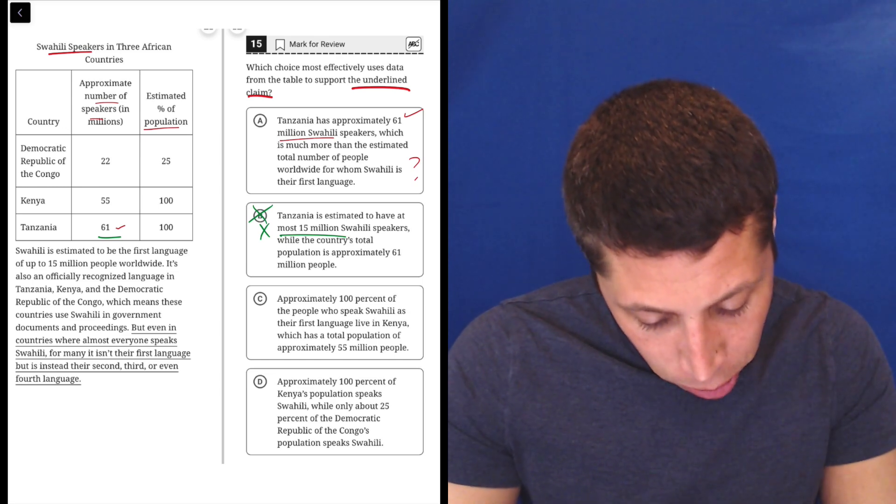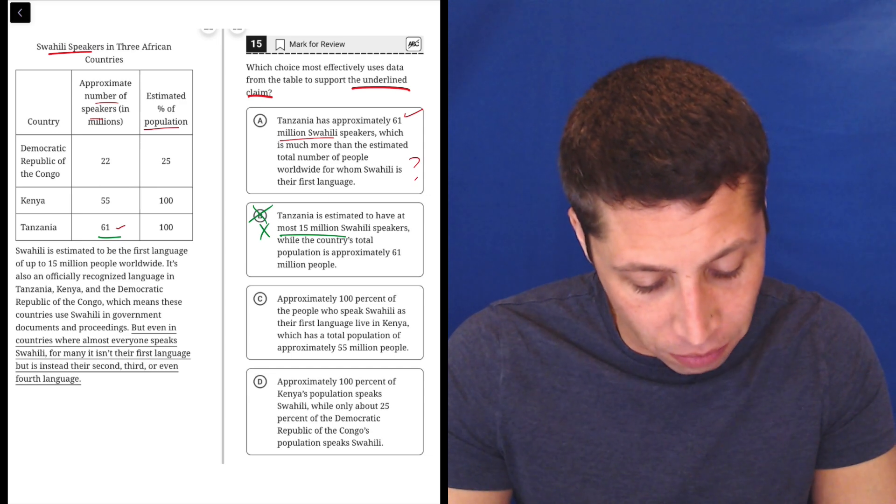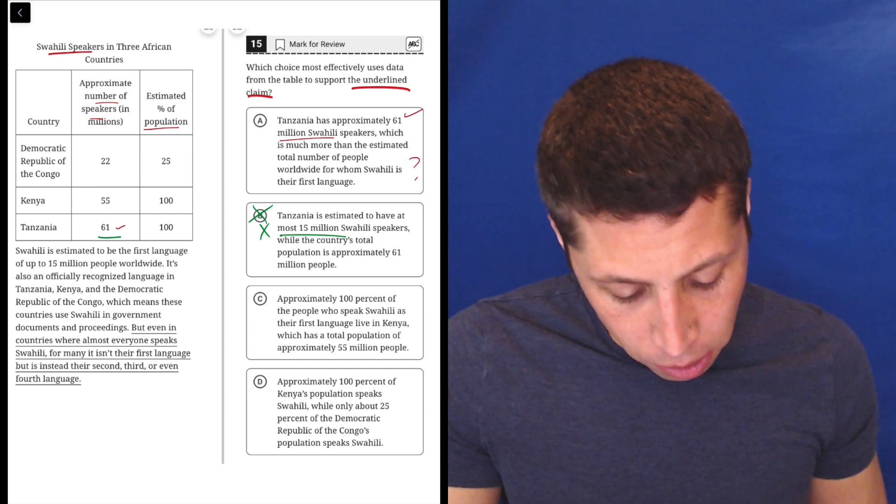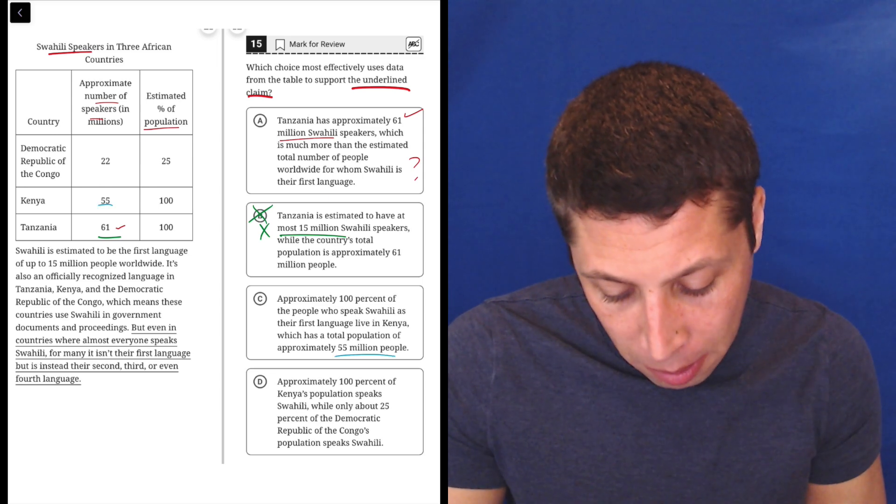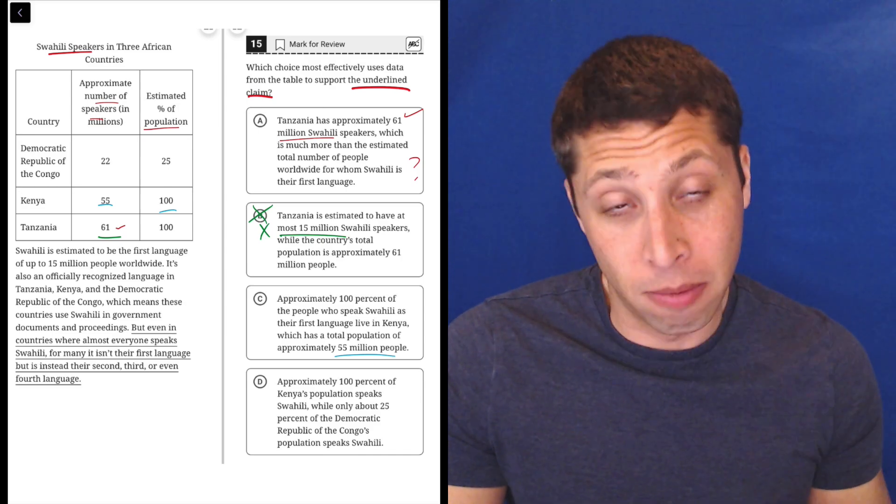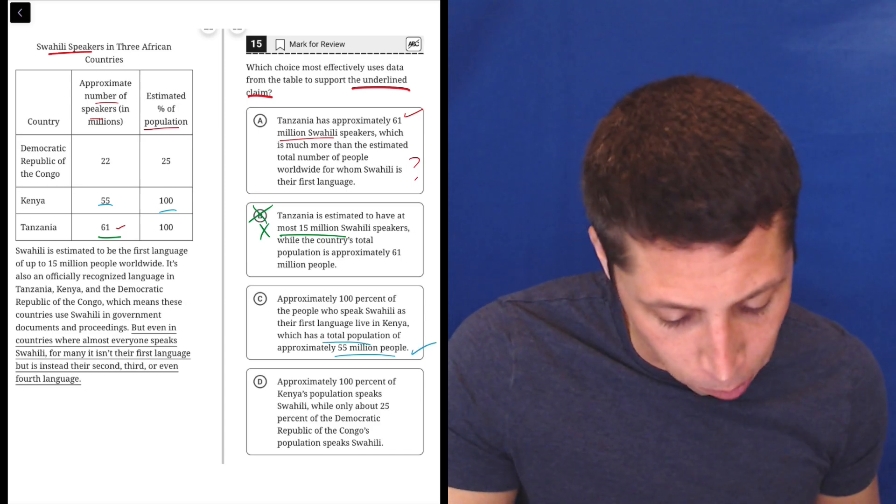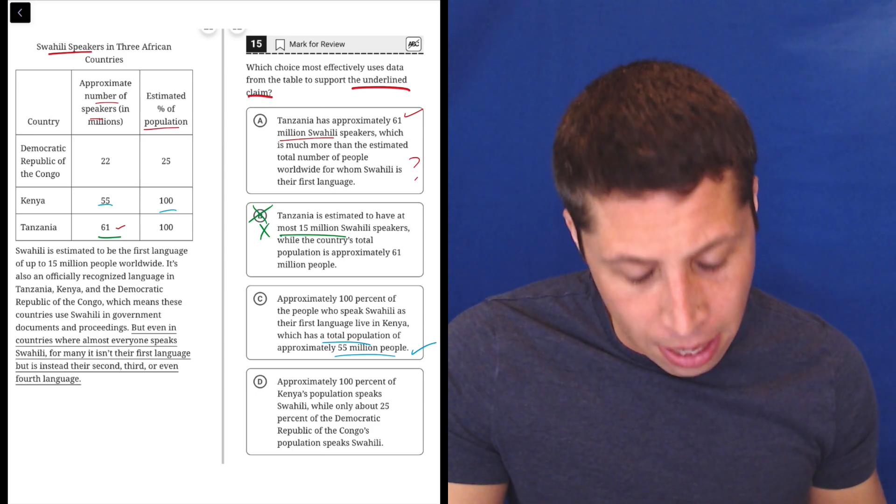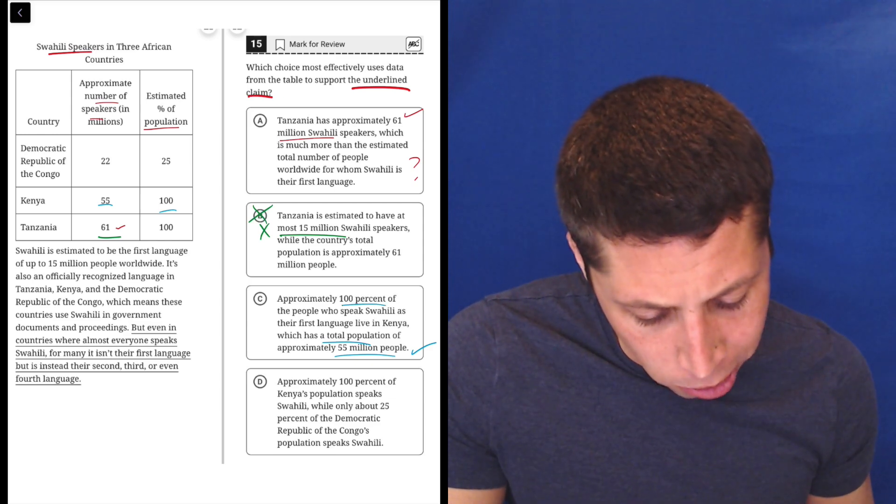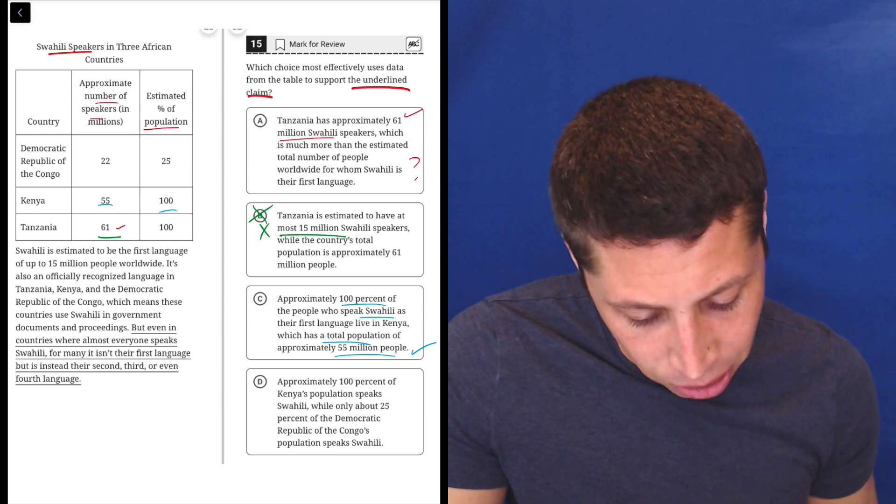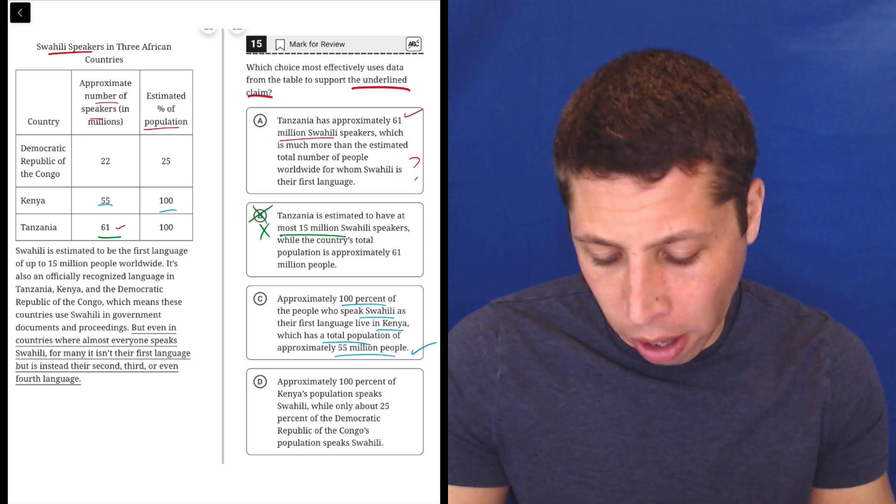C. Approximately 100% of the people who speak Swahili as their first language live in Kenya, which is a total population of approximately 55 million people. Well, okay. There's two facts there. The 55 million seems correct because that's the approximate number of speakers and that's estimated 100% of the population. So that seems okay. There is a total population of 55 million. But this first piece seems to be a misinterpretation.